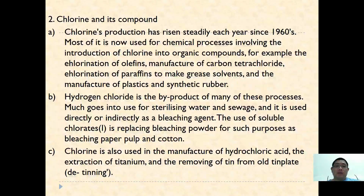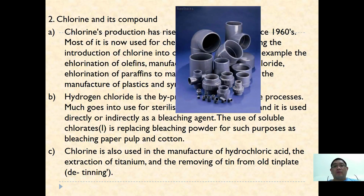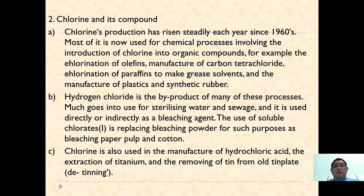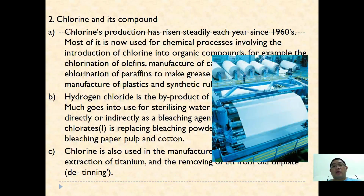For chlorine and its compounds, chlorine production has risen steadily. One of the most important uses of chlorine is to make PVC. Hydrogen chloride is also used for bleaching paper.